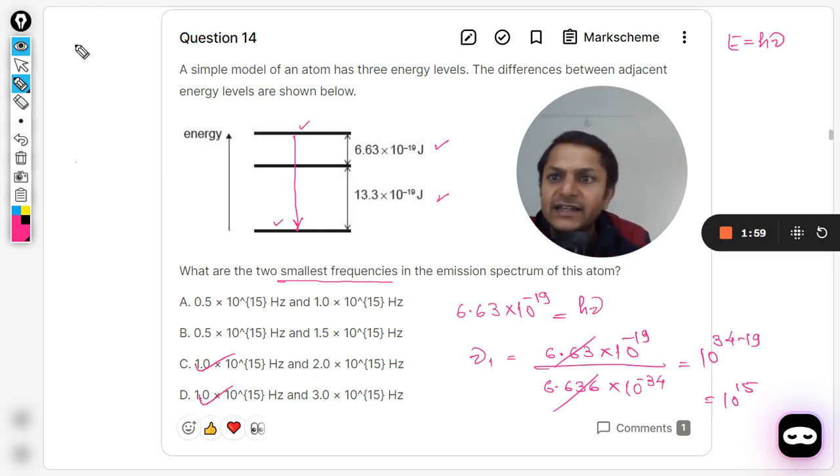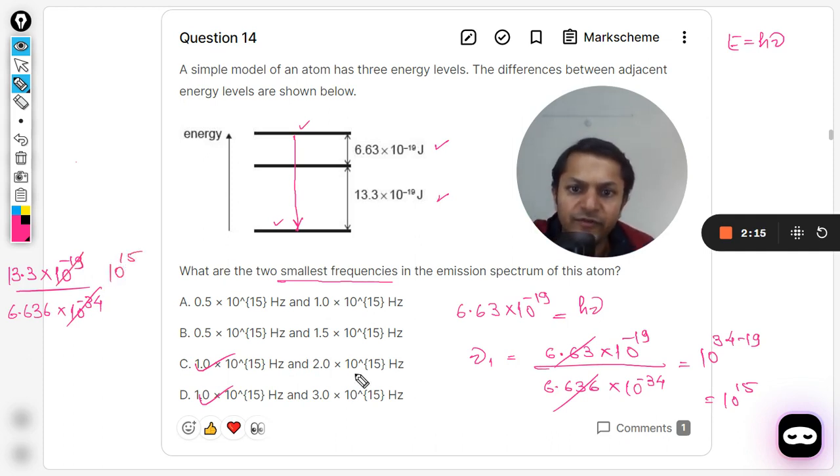Now we are going for the second case. So second case, energy is 13.3 × 10^-19. By using the same formulation we would be dividing it by 6.636 × 10^-34, so this is going to give you the same value 10 raised to power 15. And what about this 2 or 3? It's approximately 2, isn't it? We can clearly see it 6 to the 12, so it's approximately 2.